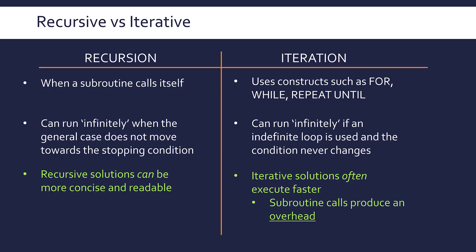It takes time to allocate that memory and to save those values. And when the subroutine finishes, it's got to pop that frame off the stack, then resume execution somewhere else. That shuffling around takes up time — this is what we describe as an overhead: where you're using up some time or resource in order to do another task. It's a side effect that takes up some of your processor time.